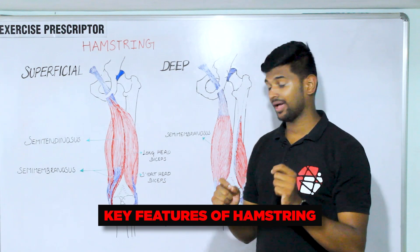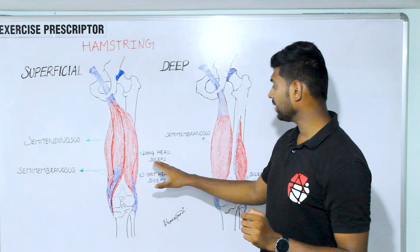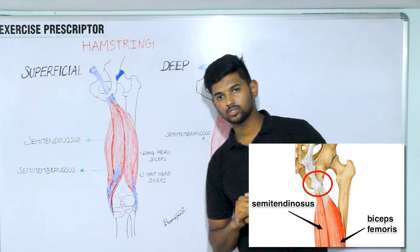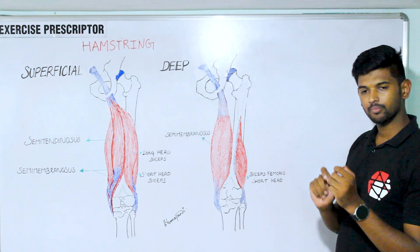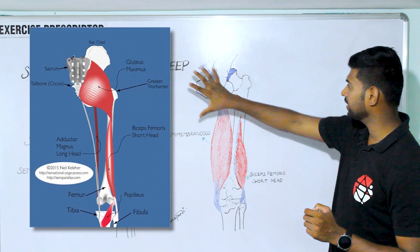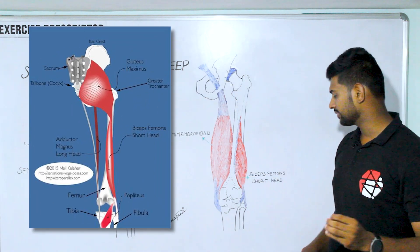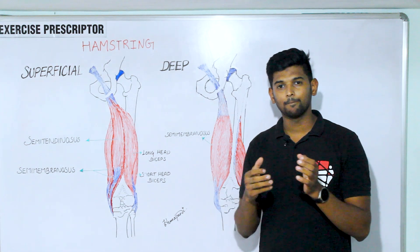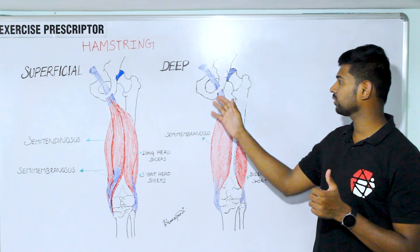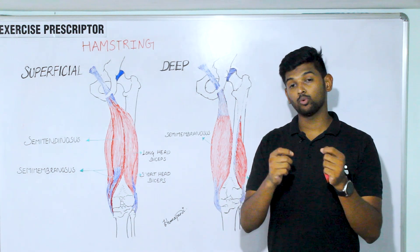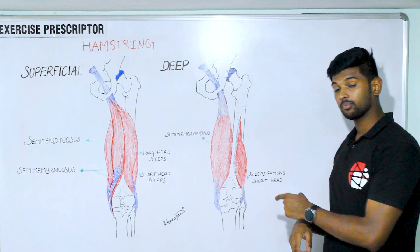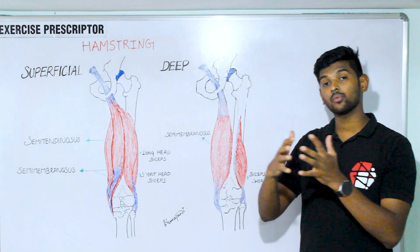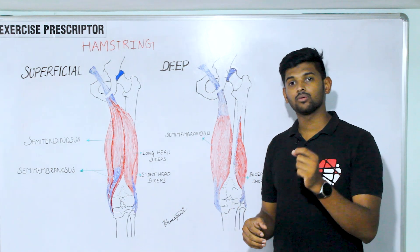Key features of the hamstring: the proximal attachment of the long head of biceps femoris is connected and blended with the semitendinosus muscle, and the proximal attachment of the short head of biceps femoris is connected and blended with the distal attachment of gluteus maximus. Sometimes the short head of biceps femoris is not called a true hamstring muscle, because it does not attach over the ischial tuberosity, does not cross the hip joint, and most importantly it is not innervated by the tibial nerve — a branch of the sciatic nerve. The short head of biceps femoris is innervated by the common fibular nerve.